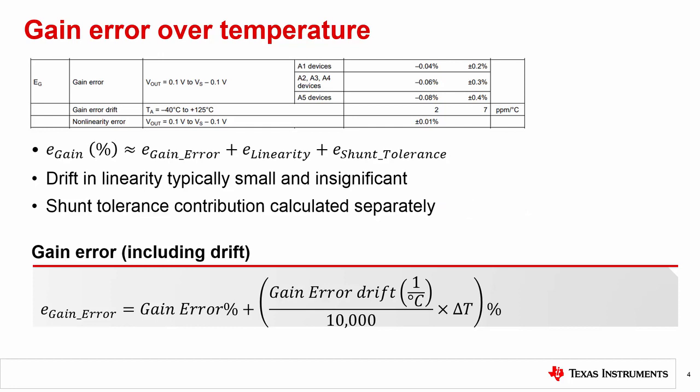For gain error at room temperature, you would just need to pluck the max specification from the datasheet and plug it into the RSS formula. However, if your temperature is not 25 degrees Celsius, you will need to incorporate the gain error drift coefficient, as shown in the formula here. Delta T corresponds to how far the temperature is from 25C, or the typical temperature stated right above the electrical characteristics table.